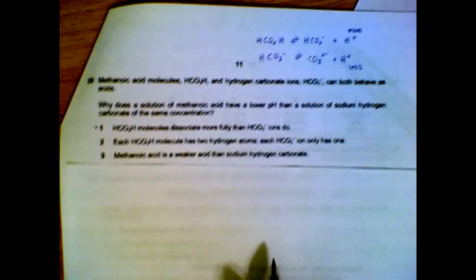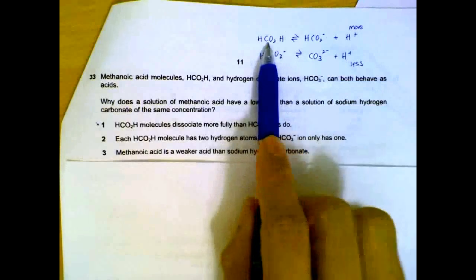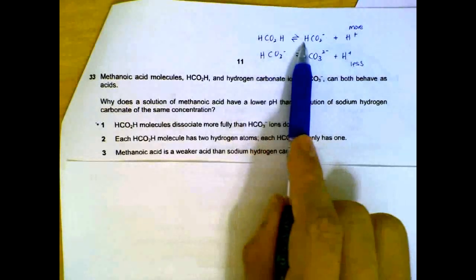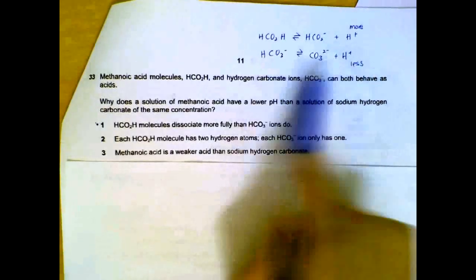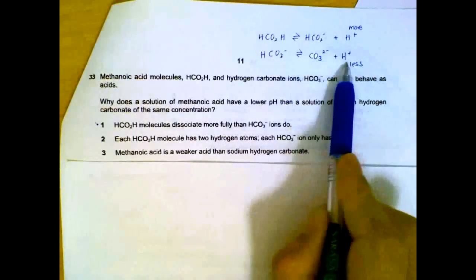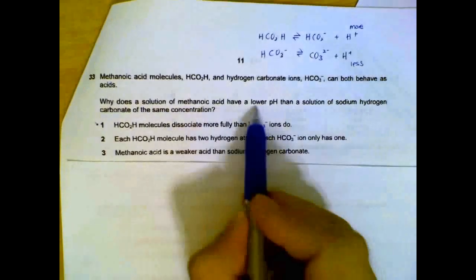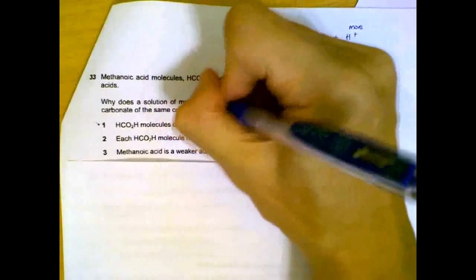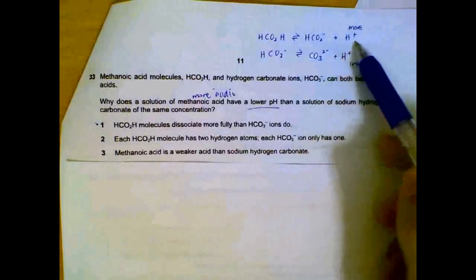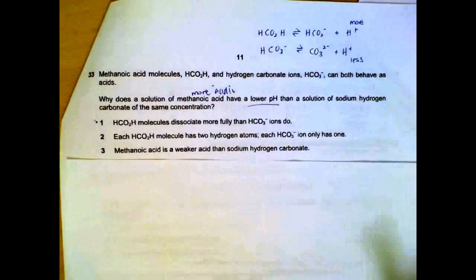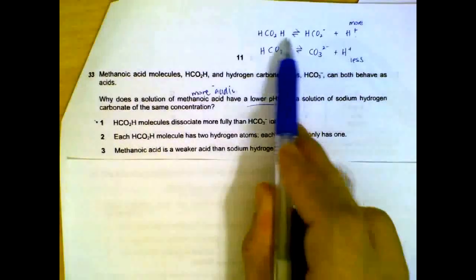Question 33. Methanoic acid and hydrogen carbonate. Methanoic acid, for it to behave like an acid, it will undergo this reaction and give off H+. Hydrogen carbonate, for it to be an acid, it will form carbonate and produce H+. They are saying that methanoic acid has a lower pH, so this one is more acidic, meaning we have higher concentration of H+. So why could this be? It dissociates more fully. Because it dissociates more fully, we have more H+ for the first reaction.